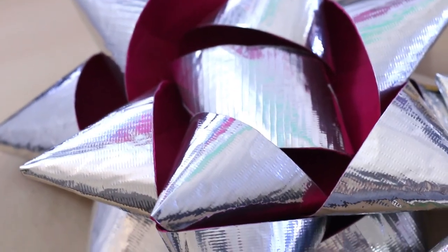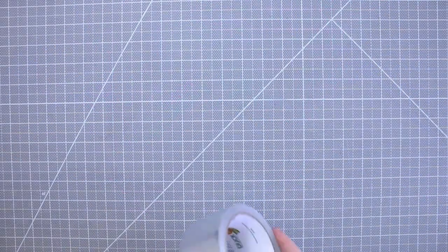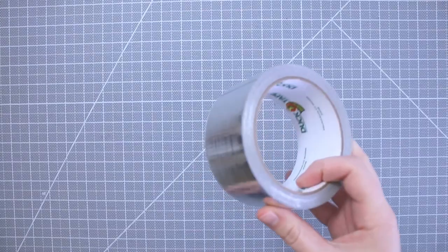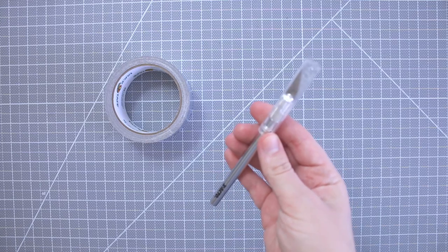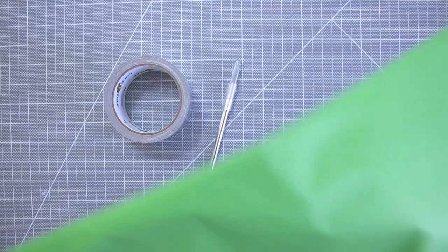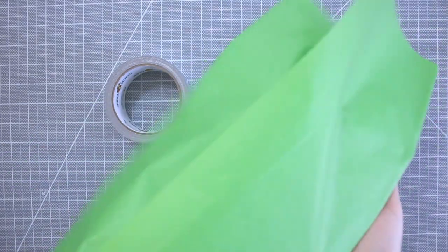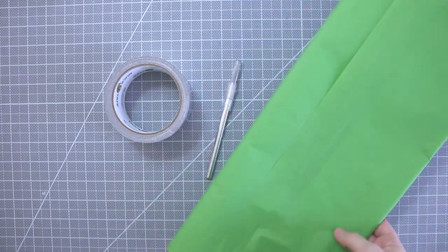To make one I'm using a cutting mat, this silver duct tape but you can of course use any color, an exacto blade or you can also use scissors, and tissue paper for the sticky side of the tape. You can also stick the duct tape back to back instead of using tissue paper if you prefer.